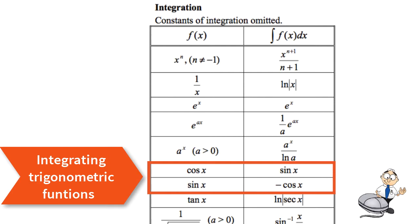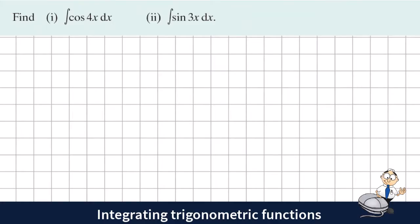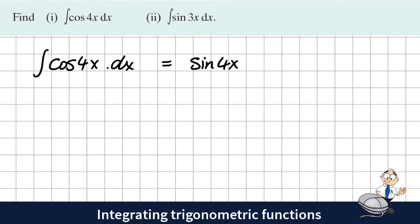Let's look at an example. We've been asked here to integrate the cosine of the angle 4x dx. We need to learn off the result for this. We know that the integral of cos of an angle is positive sine of that angle, but when it's 4x instead of x, we need to divide our answer by 4. So the answer is sine 4x divided by 4, plus the constant of integration c.